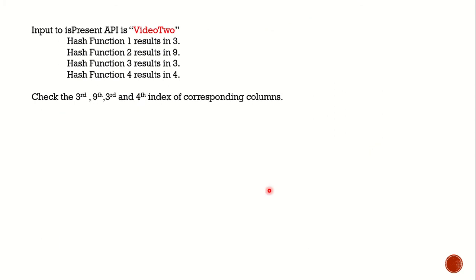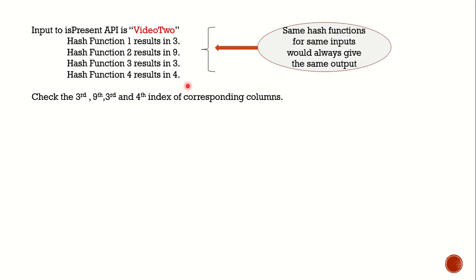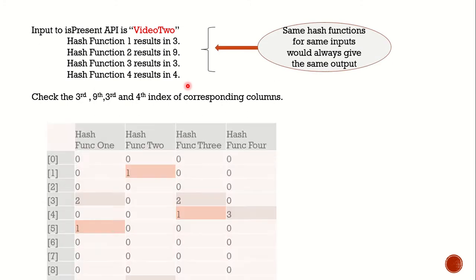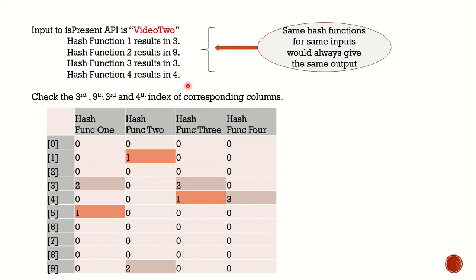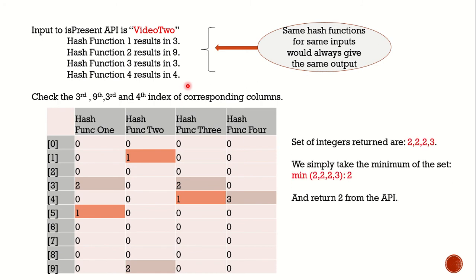Let's take another example: video 2. For hash function 1, video 2 gives us 3. Similarly, we get 9, 3, and 4 — the same outputs as before because we use the same hash functions. Looking at the matrix, the values at the corresponding locations are 2, 2, 2, and 3. The minimum of 2, 2, 2, and 3 is 2, which means video 2 was watched at least twice.